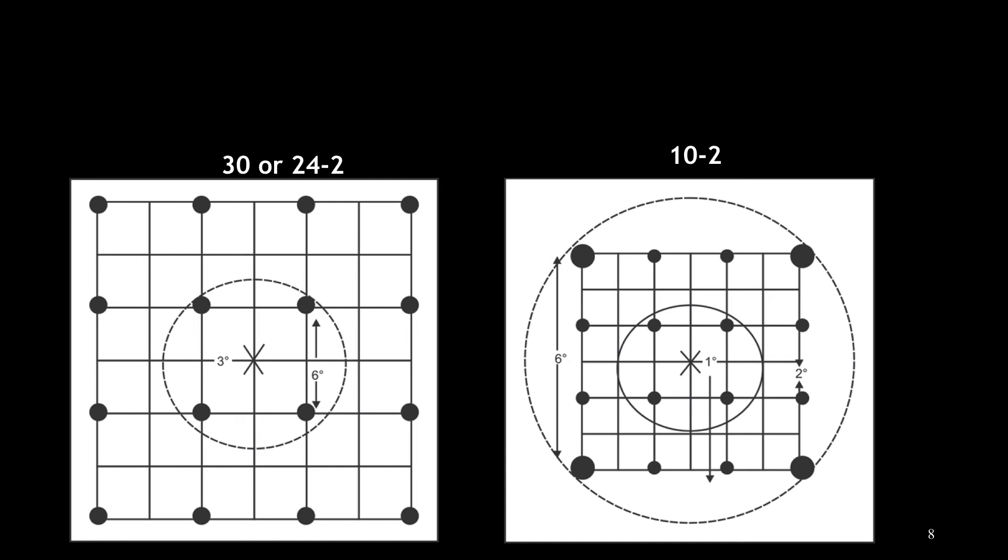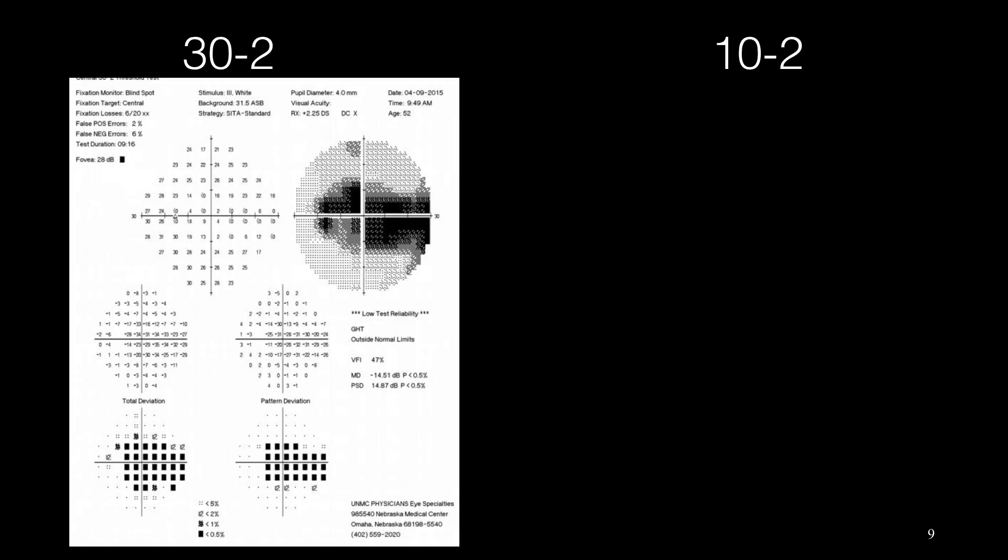In addition, when talking about 30 and 24-2 at the central 6 degrees, we are checking only four points. While in 10-2, because the space between the points is 2 degrees, we are checking 16 points.